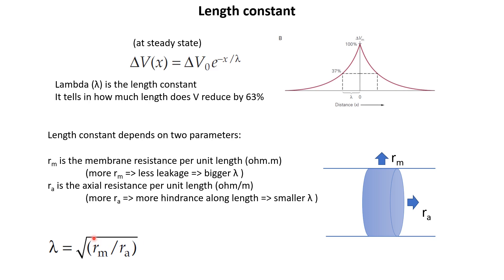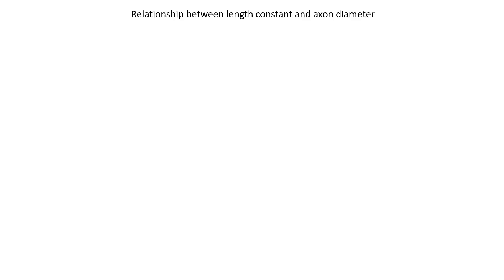Since Rm has units of ohm times meter and Ra has units of ohm divided by meter, the ratio Rm over Ra has units of meter squared, and after taking the square root, lambda gets the unit of meters. Now let's see how the length constant lambda depends on axon diameter. If we have an axon with a large diameter and another with a small diameter, with everything else the same, which one would have a larger length constant?